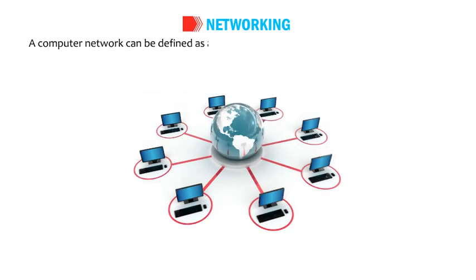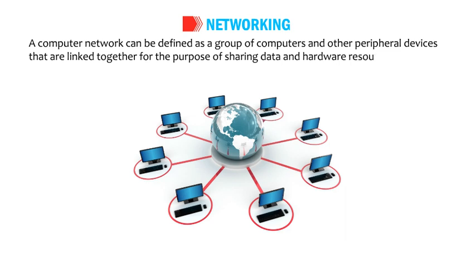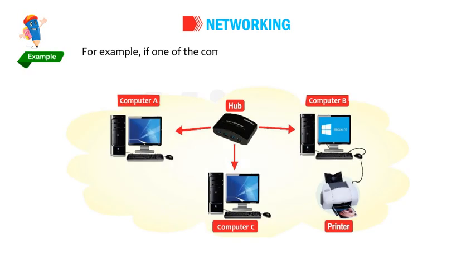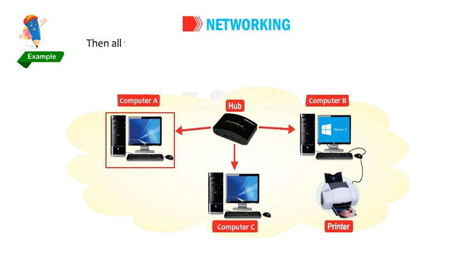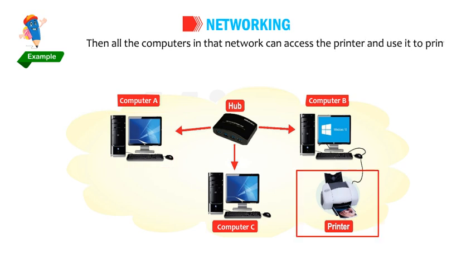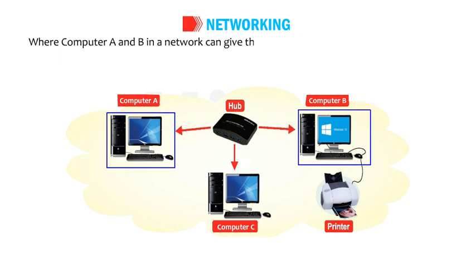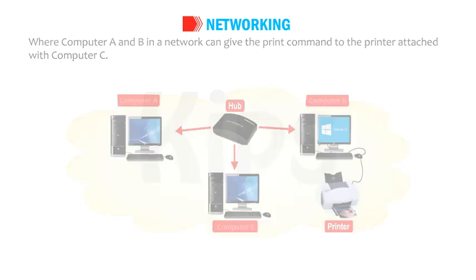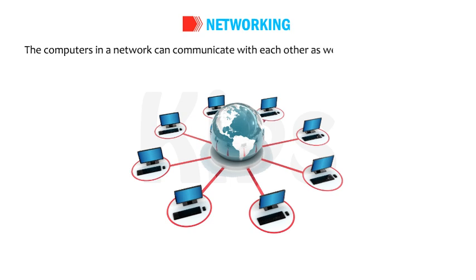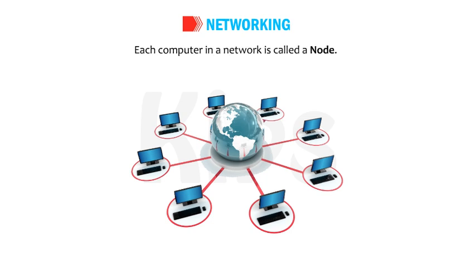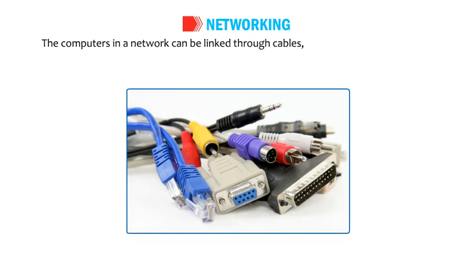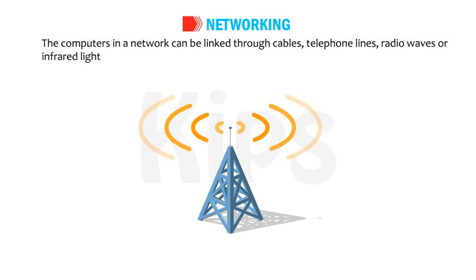A computer network can be defined as a group of computers and other peripheral devices that are linked together for the purpose of sharing data and hardware resources. For example, if one computer in a network has a printer attached to it, then all the computers in that network can access and use it. Each computer in a network is called a node. Computers in a network can be linked through cables, telephone lines, radio waves, or infrared light beams.